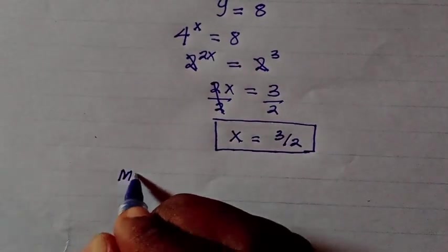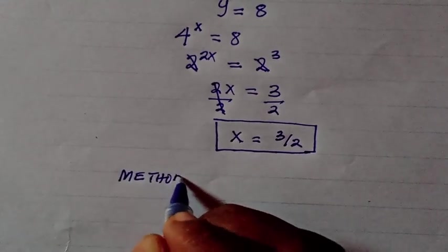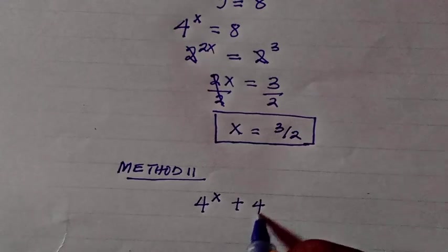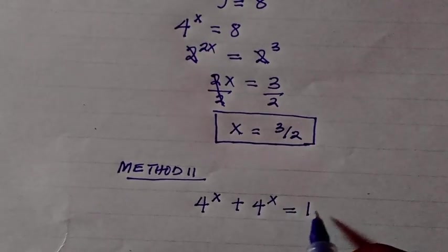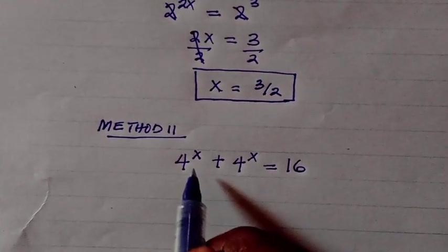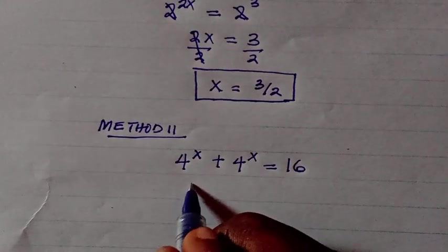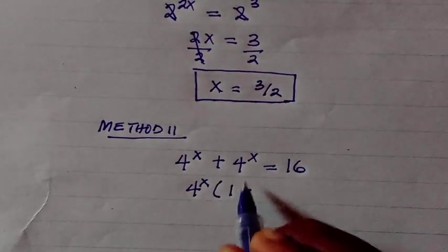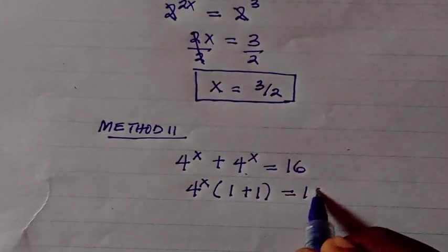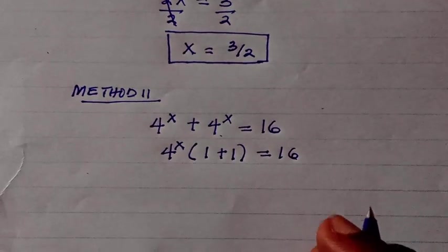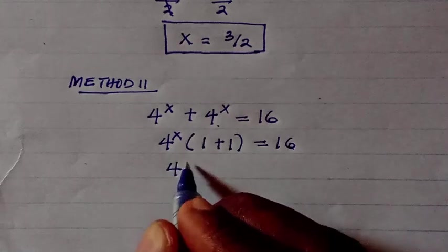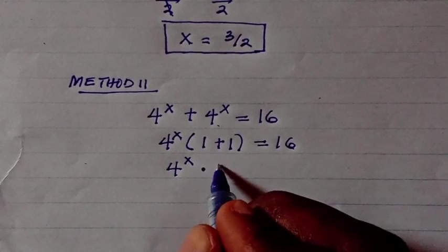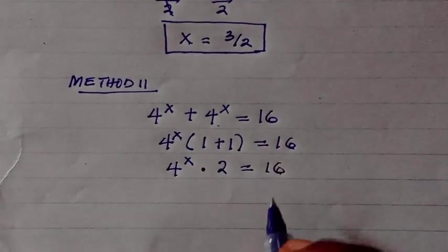Now here is the second method to solve this problem. We have 4 to the power of x plus 4 to the power of x equals 16. Here we take 4 to the power of x out as a factor — each term then contributes 1 — so we get 4 to the power of x times 1 plus 1, which gives 4 to the power of x times 2 equals 16.